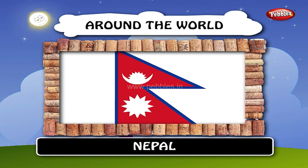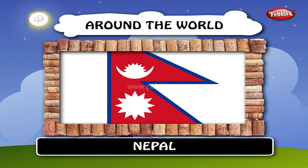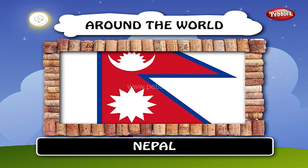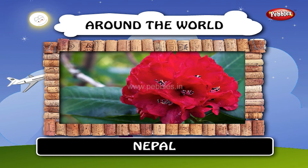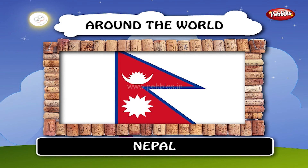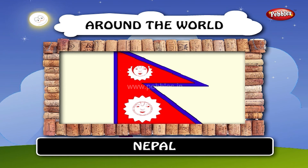Nepal — the national flag of Nepal is the only national flag in the world that is not a quadrilateral. The flag is a simplified combination of two single pennants from different branches of the previous rulers, the Rana dynasty. Its crimson red is the color of the rhododendron, the country's national flower. Red is also the sign of victory in war. The blue border is the color of peace.